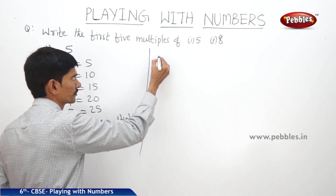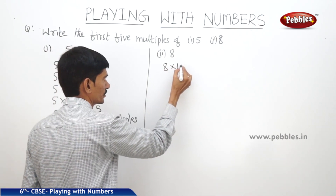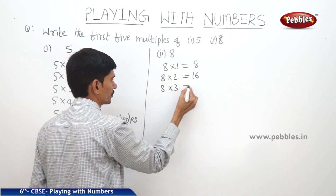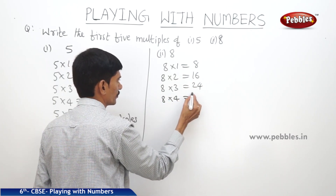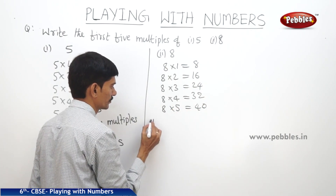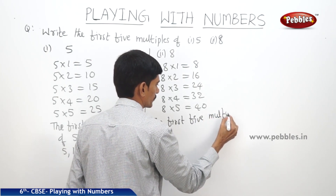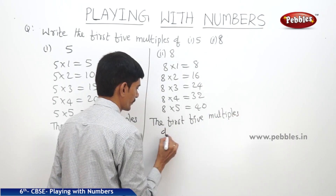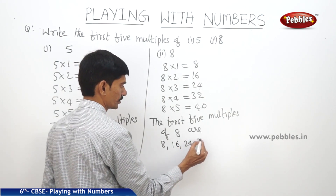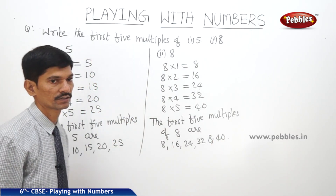The second number is 8. Multiplying 8 by 1, 2, 3, 4, and 5: 8 into 1 equals 8, 8 into 2 equals 16, 8 into 3 equals 24, 8 into 4 equals 32, and 8 into 5 equals 40. So the first five multiples of 8 are 8, 16, 24, 32, and 40.